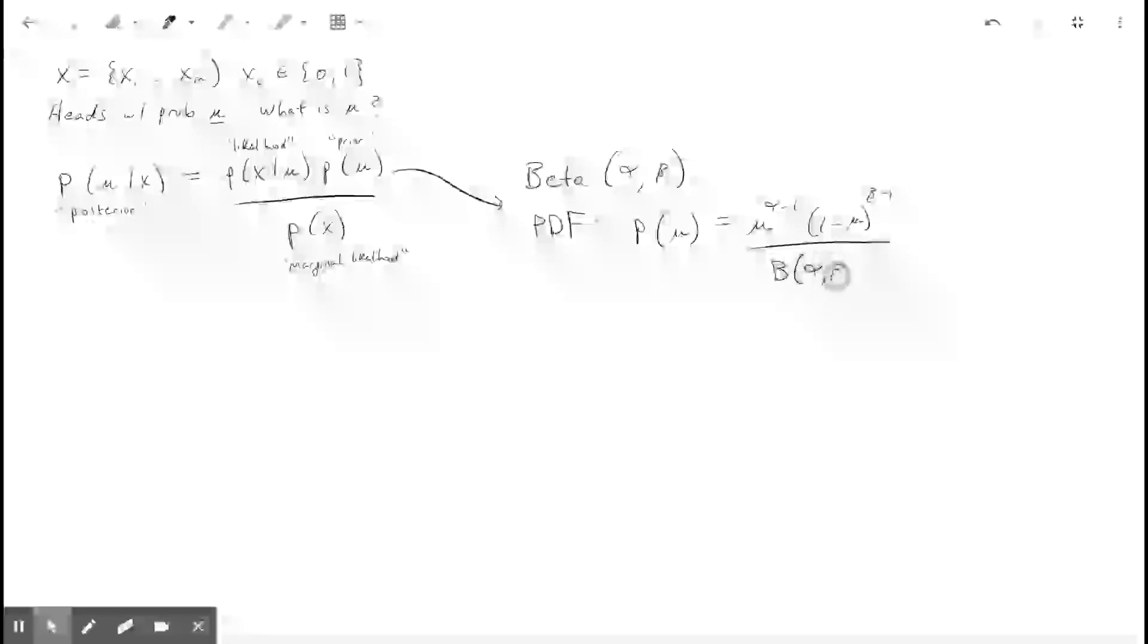So we have a beta parameter, we have a beta distribution, and now we have a beta function. And just diving a little more into what this beta function is, it's defined as the integral over a variable t of t to the alpha minus 1, 1 minus t to the beta minus 1.